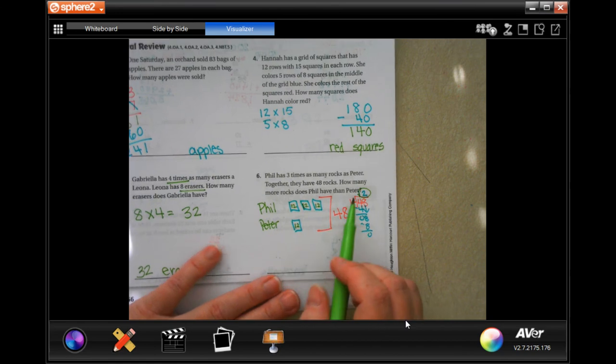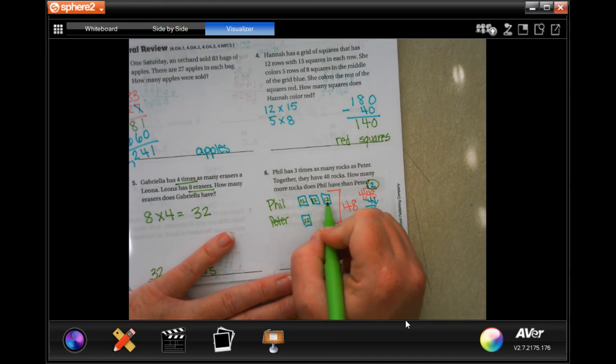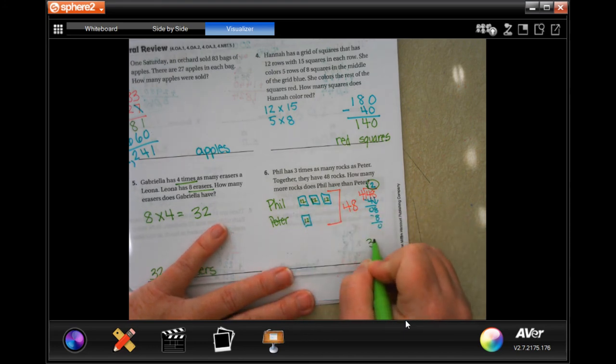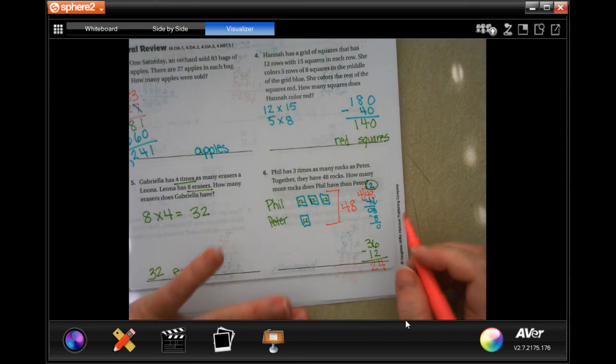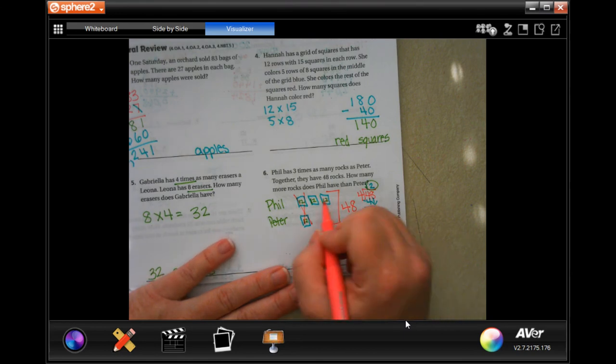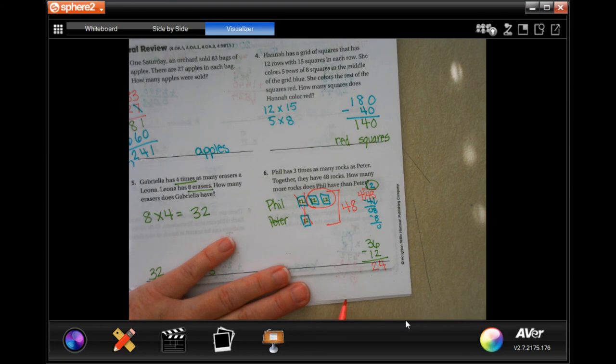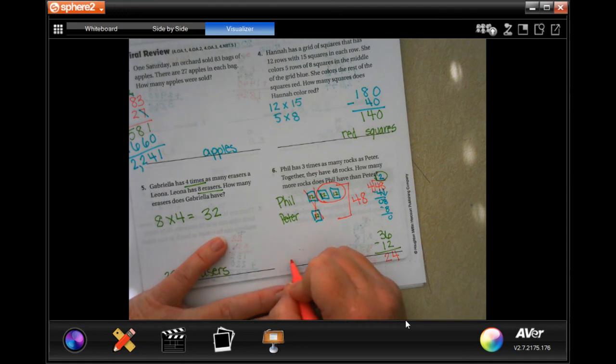How many more rocks does Phil have than Peter? So that means that Phil has 12, 24, 36 rocks. And Peter has 12. Well, I need to find the difference. So I need to subtract. 6 minus 2 is 4. And 3 minus 1 is 2. Now, the other way to do this is, once we get here and we know that all of those are worth 12, cross out what they have that matches, and then just worry about what they have extra. 12 and 12 is 24. Which is the same answer we got here. 24 more rocks.